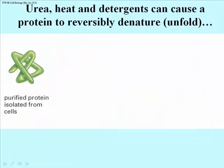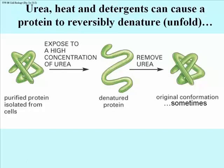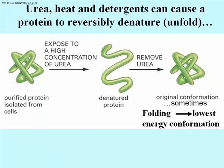We can denature proteins — that is, disrupt those weak bonds. Here is urea denaturing a protein. By denature we mean unfold: basically disrupt all of the van der Waals forces, ionic interactions, and hydrogen bonds holding the three-dimensional structure together. If you remove urea, which you can do by the process of dialysis, you can sometimes get back the folded protein you started with. What really happens when you remove the cause of denaturation is that the protein folds to its lowest free energy conformation, which is another way of saying it folds to its most stable state.